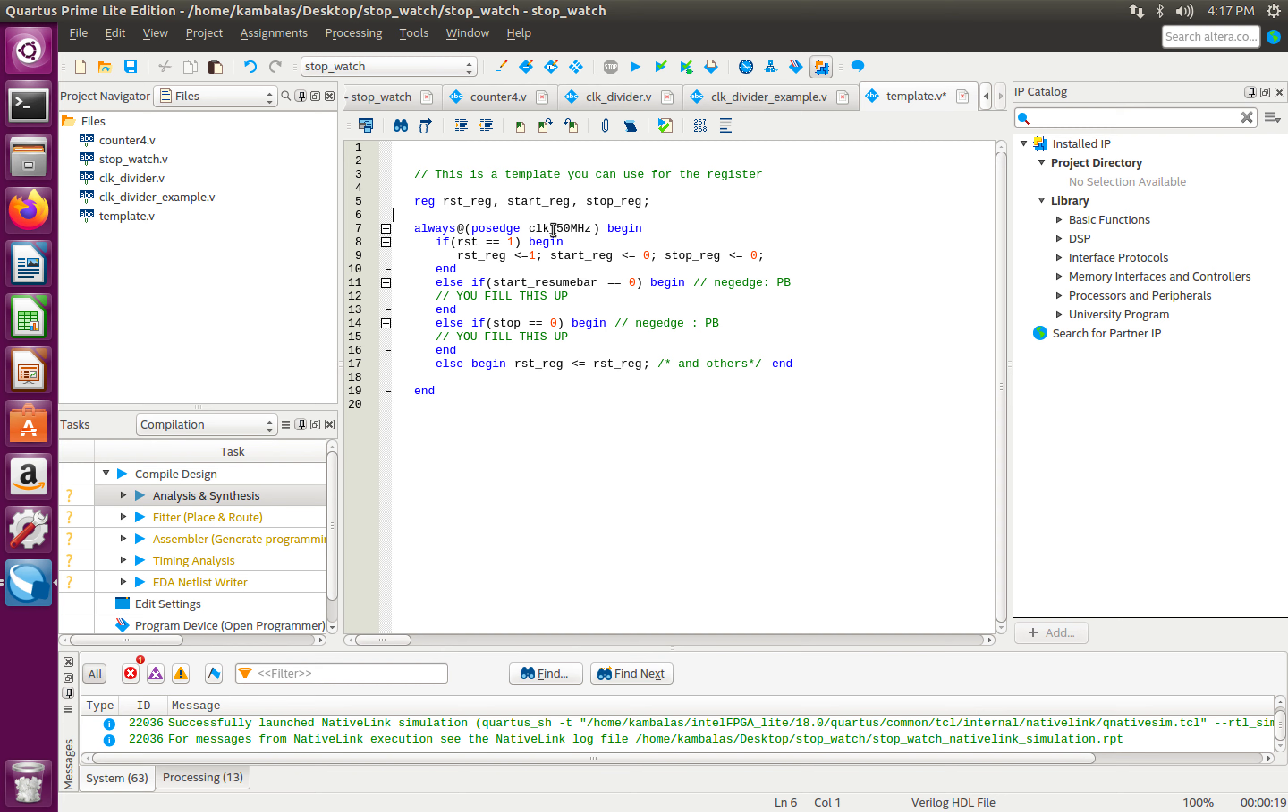Next, always at the positive edge of clock 50 megahertz. The reason I am only checking this on the positive edge of my 50 megahertz is because that is the faster clock. If I checked it on the 1 hertz clock, that is the slow clock, which means my design will be very slow. It is always a good thing to always check your registers on the faster clock.